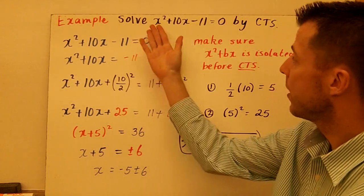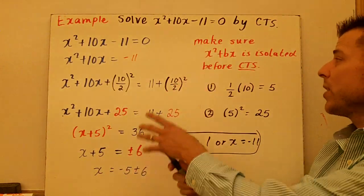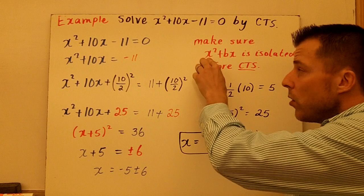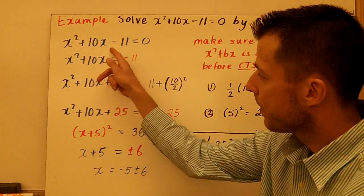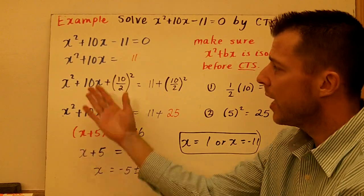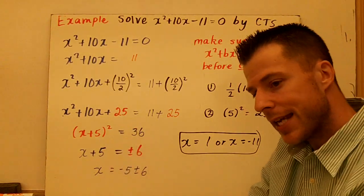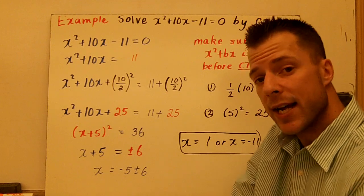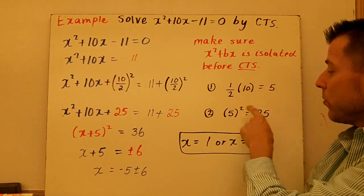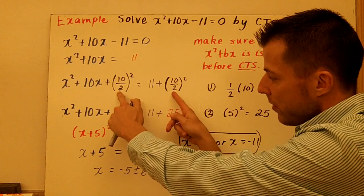Now we're going to solve the quadratic using the completing the square method. When you complete the square, make sure that x squared plus bx is isolated — no constant with it — and the coefficient is 1, which is important. In this first step, I subtract 11 from both sides so that I have my x squared plus bx term on one side. Then the whole process is taking half of b, squaring it, and adding it to both sides. Half of 10 is 5, squared is 25, and I add it to both sides — that's completing the square.